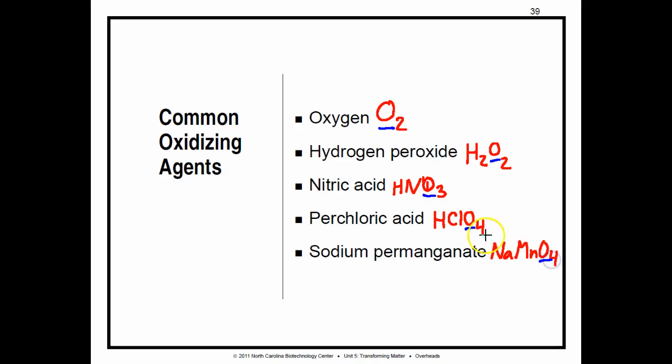What these compounds basically do in a reaction is give up some of their oxygen to something else and make that reaction occur — they help the reaction happen. Oxygen is the most common oxidizing agent. Hydrogen peroxide is an antiseptic. Nitric acid acts rapidly and turns exposed skin brown. Perchloric acid is a powerful oxidizing agent. Sodium permanganate reacts easily with water and releases heat.